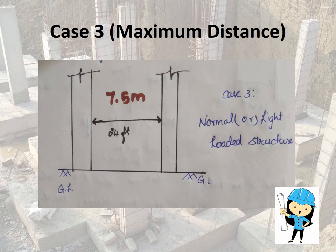Some cases we provide the distance between the two columns is 7.5 meter because it is a very light loaded structure. In this case, it is very preferable. But for the heavy loaded or the normal loaded structures, it is not preferable. If we provide this, we should definitely increase the depth of the beam and the column sizes.